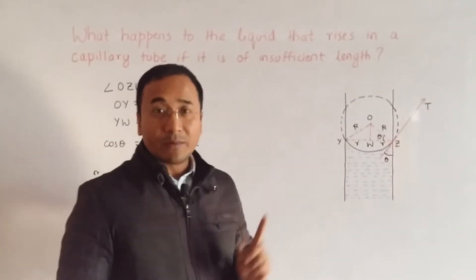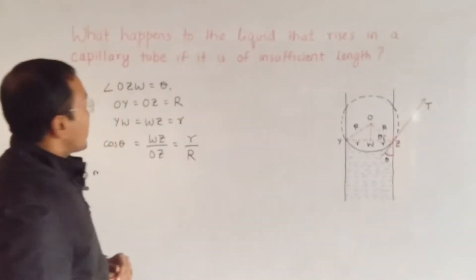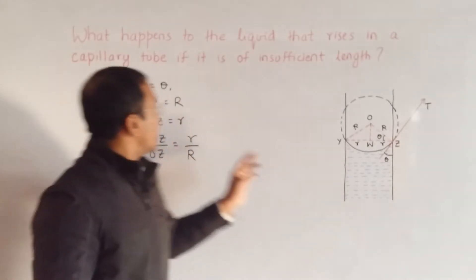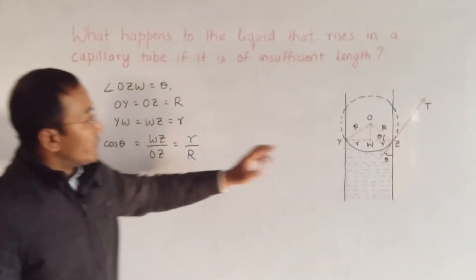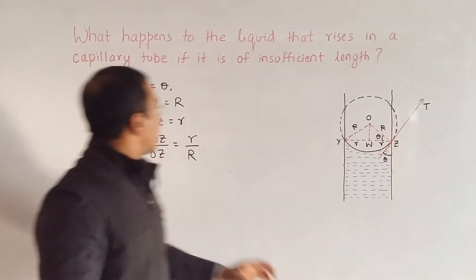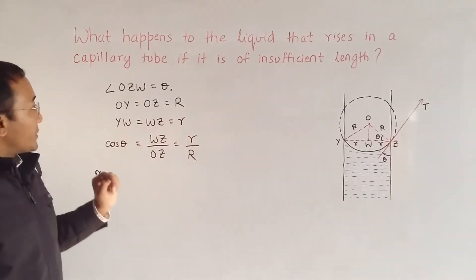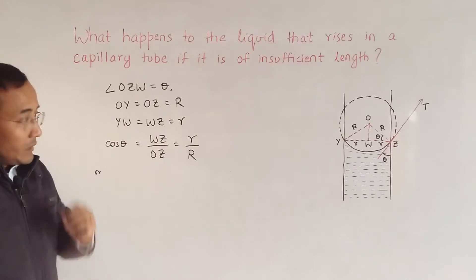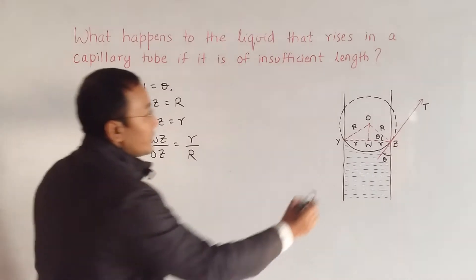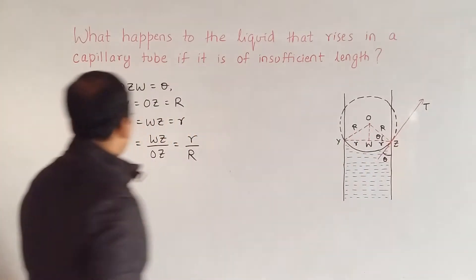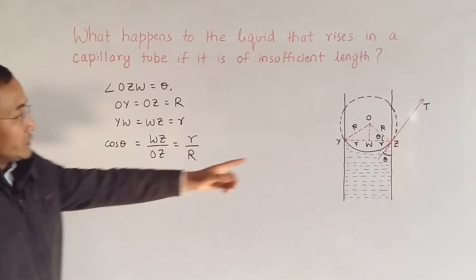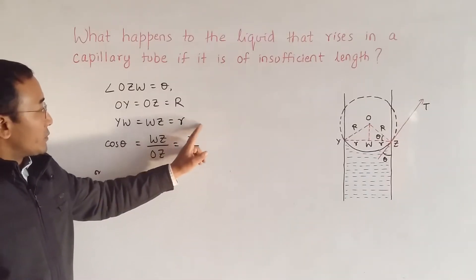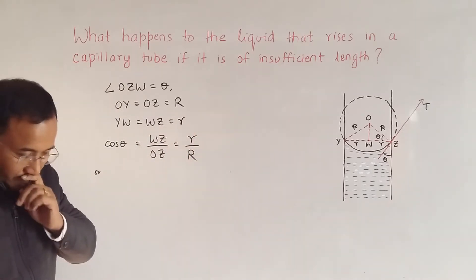As you can see from here, angle O-W is theta. We have OY equal to O-jet equal to large R, capital R. We have YW equal to W-jet equal to small r. As you can see from this triangle O-W-jet, cos of theta is equal to W-jet divided by O-jet, and that's equal to small r by large R.